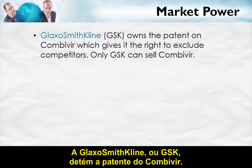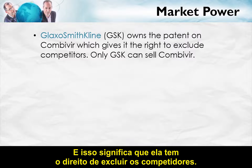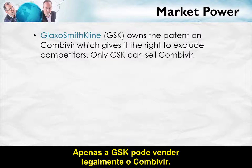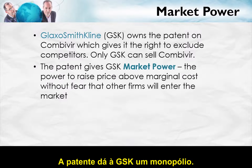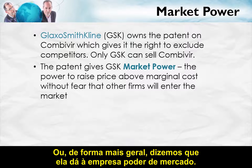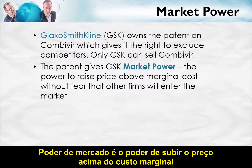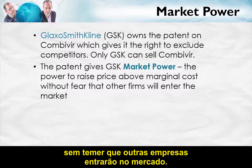GlaxoSmithKline, or GSK, owns the patent on Combivir, and that means it has the right to exclude competitors. Only GSK can legally sell Combivir. The patent gives GSK a monopoly, or more generally, market power. Market power is the power to raise price above marginal cost without fear that other firms will enter the market.